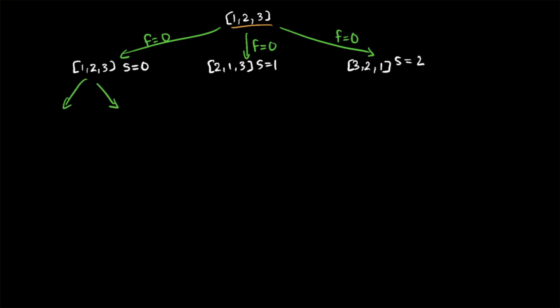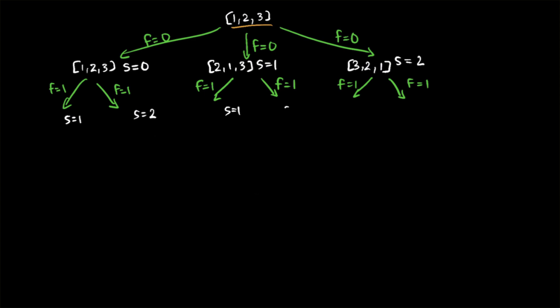Proceeding down the left child, there are only two possible branches because now f equals one. The same applies to the other nodes at this level — each has two branches. We're swapping index f, which is now index one, with indices greater than or equal to one, so we swap index one with one, and index one with two. Each node at this level therefore has s equals one or s equals two.